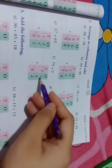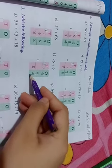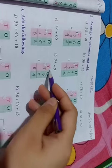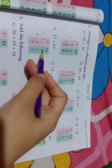Next, 75 plus 9. 5 plus 9 is 14, write 4 and 1 is carried over. 7 plus 1 is 8.